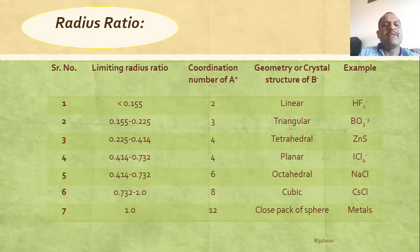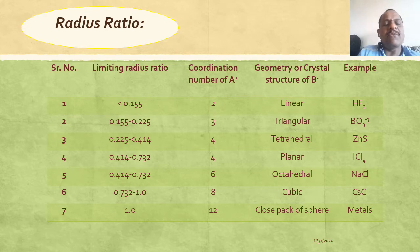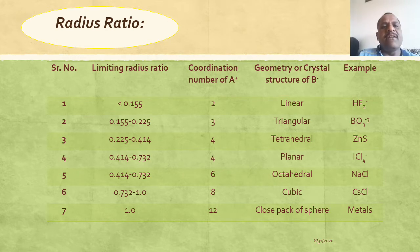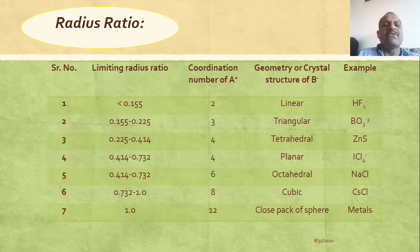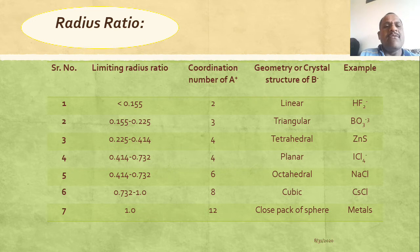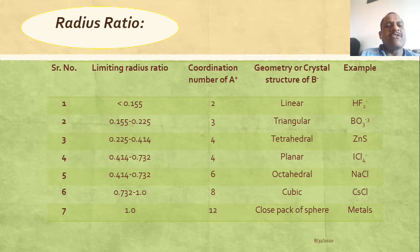Let me again discuss about radius ratio, because in the last lecture we discussed what radius ratio is and how it is important to understand the geometry of the crystal lattice as well as the coordination number of ions in the crystal lattice. What is radius ratio? It is simply the ratio of the radius of a cation to the radius of an anion. Every type of geometry has a limiting radius ratio, and with that value you can understand the geometry of crystals.